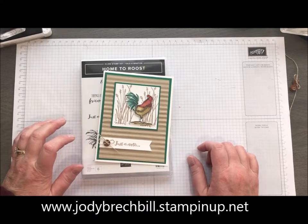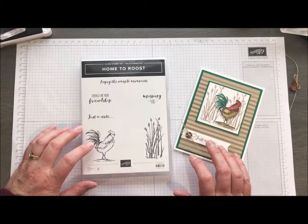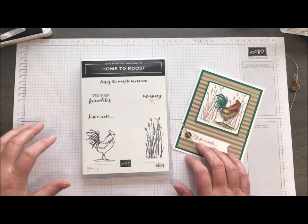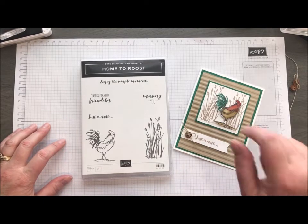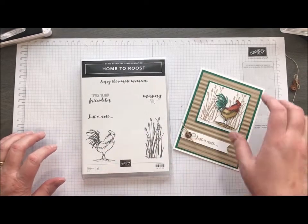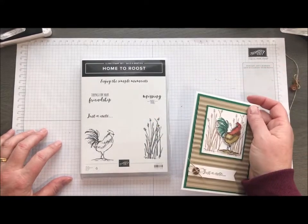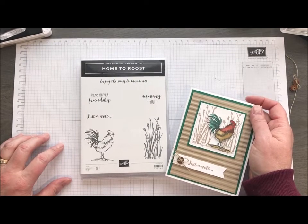Today's card is this fun little rooster card from the Home to Roost stamp set. This is a case from somebody in the UK. I'm not sure of her name, but I definitely know that she's from the UK because she calls him a cockerel. The Home to Roost stamp set is a celebration item, so this can be yours for absolutely free during celebration, which runs January, February, and March.